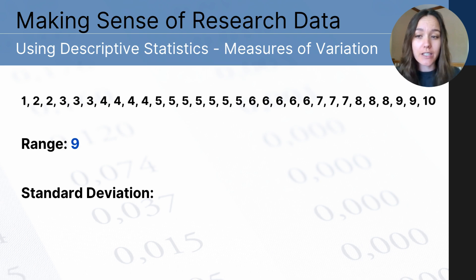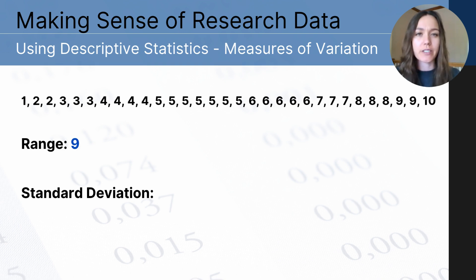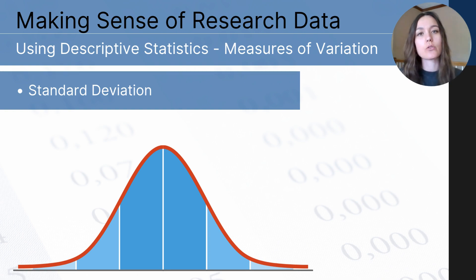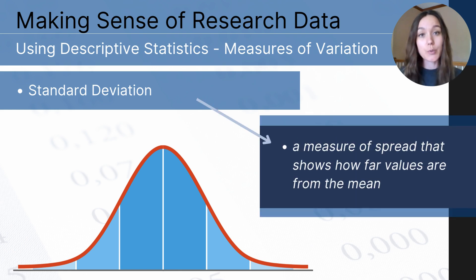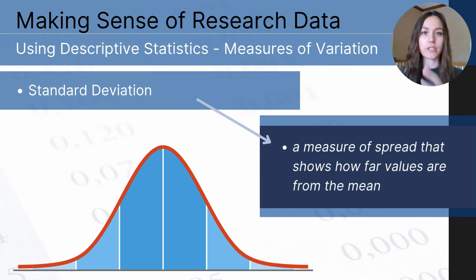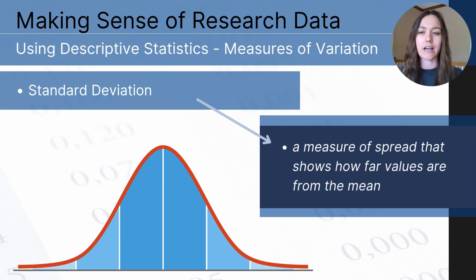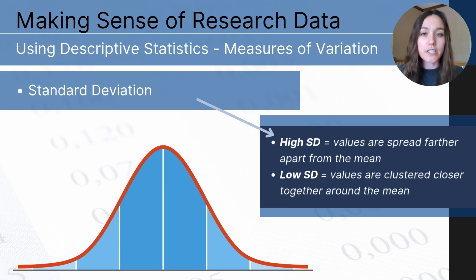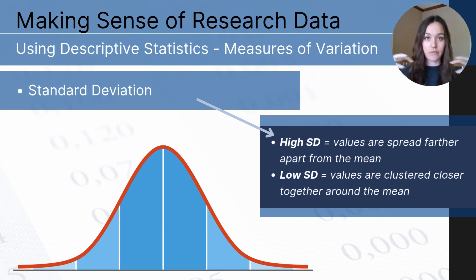You won't be calculating standard deviation, but you will want to know what it is, how it works, what its purpose is, and what it can tell us about a data set. Standard deviation, like range, is a tool that helps us describe and understand the variation of our data set. It helps us understand how spread apart our data points are from one another and from the mean. If your standard deviation is high, your numbers are likely very spread apart.